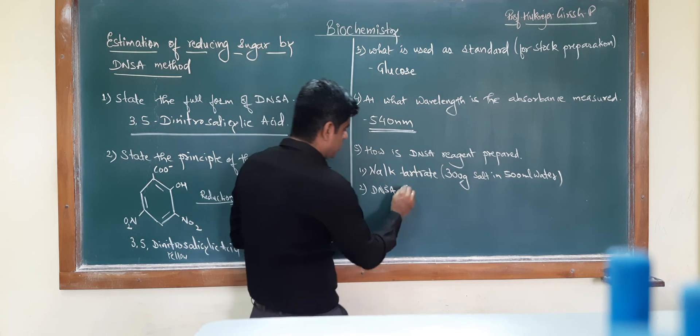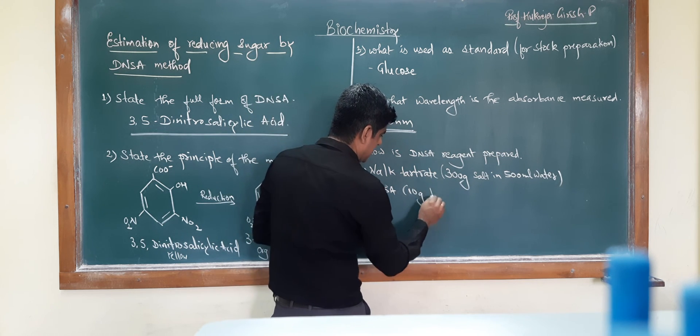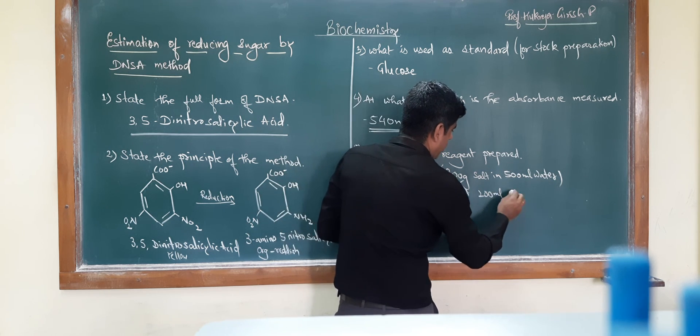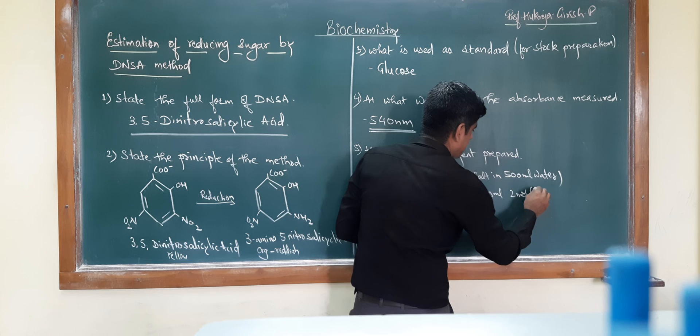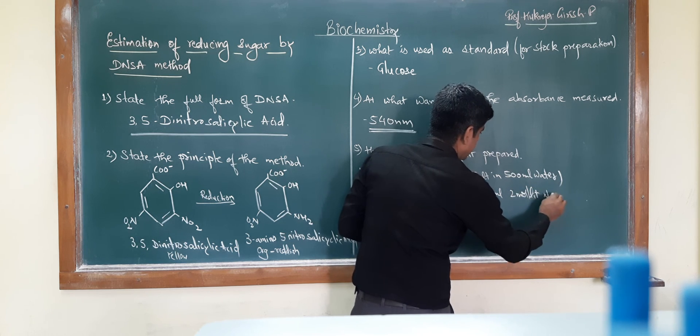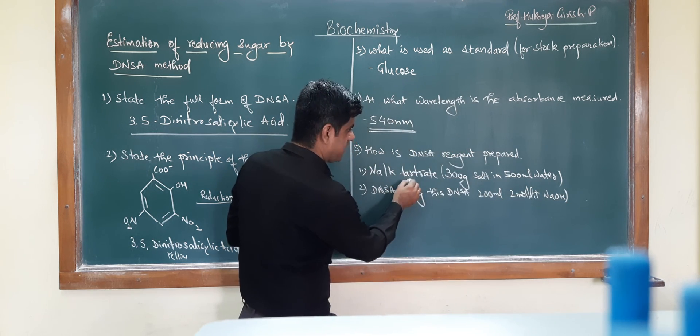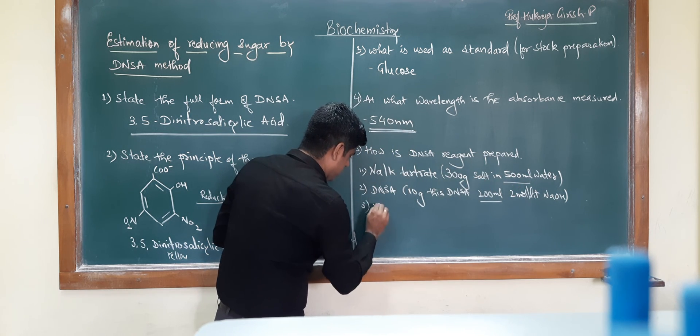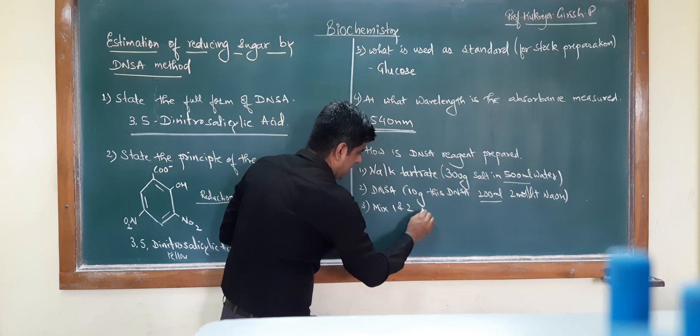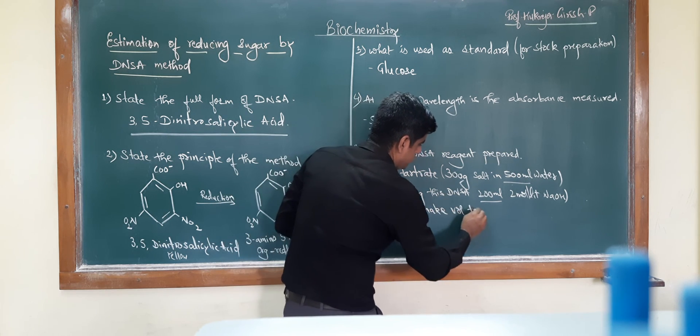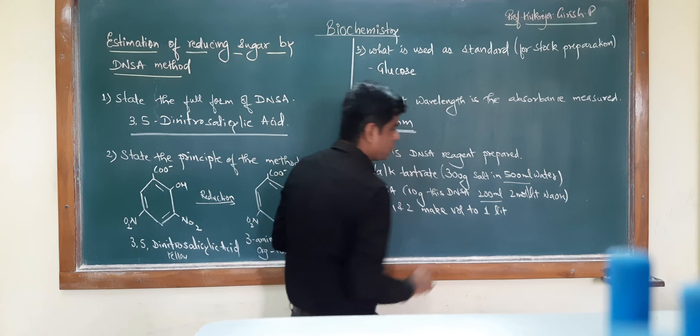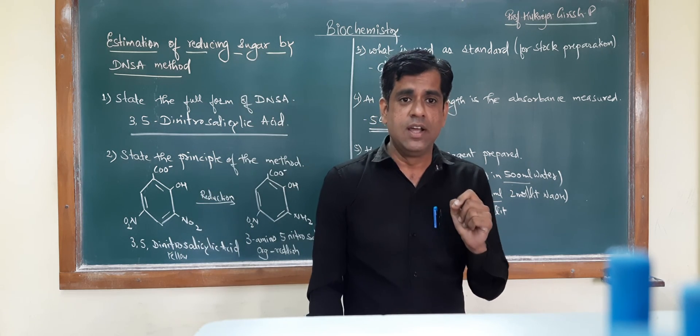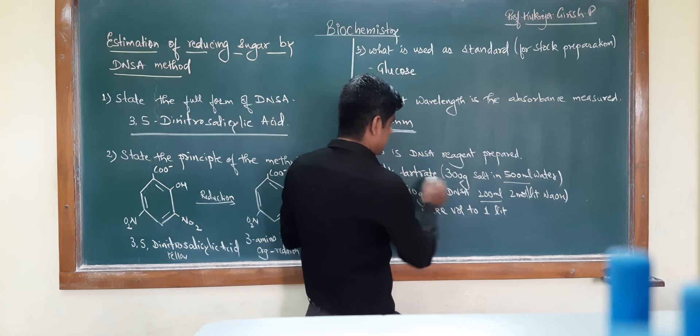For this DNSA, you will take 10 grams of this reagent and dissolve it in 200 ml of 2 molar NaOH. Now you have 500 ml and 200 ml. In the third step, you will mix solutions 1 and 2 and make the volume to 1 liter. Remember, the DNSA gets dissolved only under highly alkaline conditions.